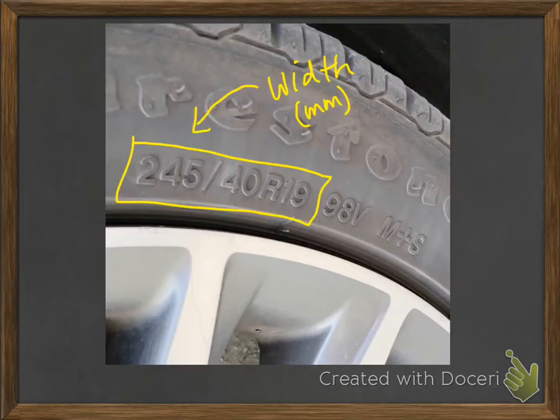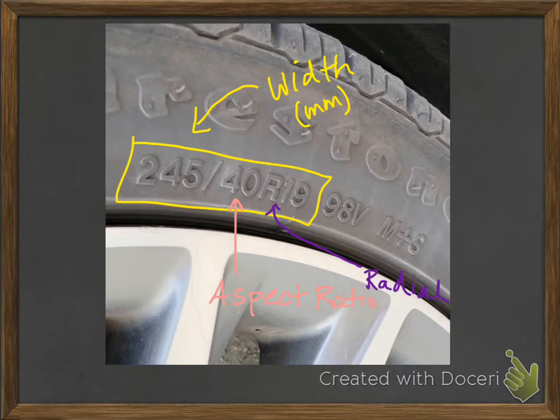This next one, this 40 in this case right here, that's our aspect ratio and we're going to go over that in a minute. And then we have this R right here, that just stands for radial. It means it's extending out from the center like a circle. We don't really care about that as far as calculations go.